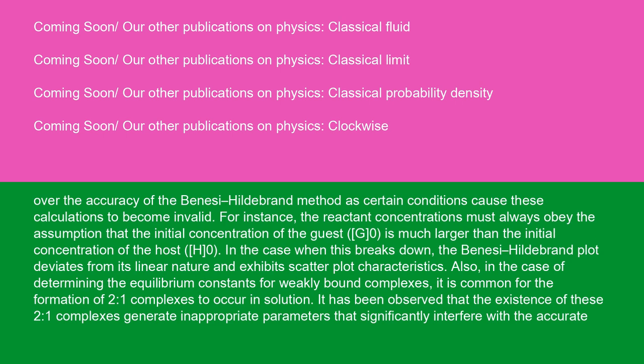Concerns have also surfaced over the accuracy of the Benesi-Hildebrand method as certain conditions cause these calculations to become invalid. For instance, the reactant concentrations must always obey the assumption that the initial concentration of the guest G0 is much larger than the initial concentration of the host H0. In the case when this breaks down, the Benesi-Hildebrand plot deviates from its linear nature and exhibits scatterplot characteristics.